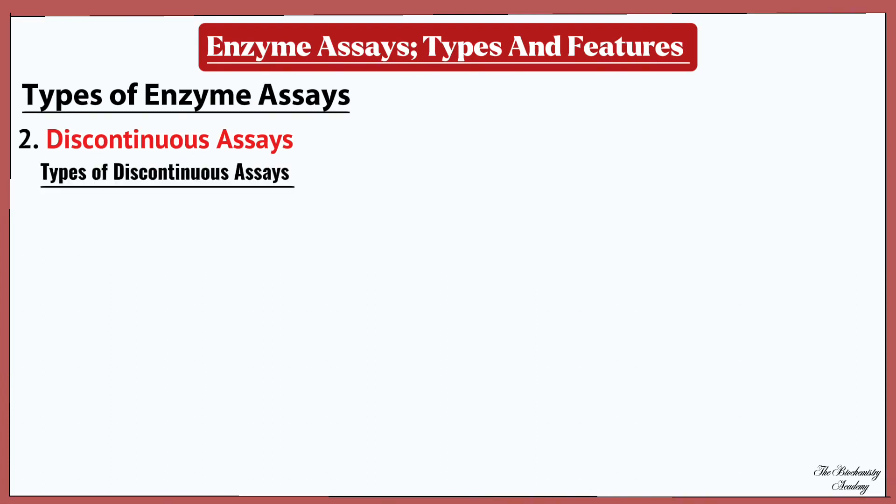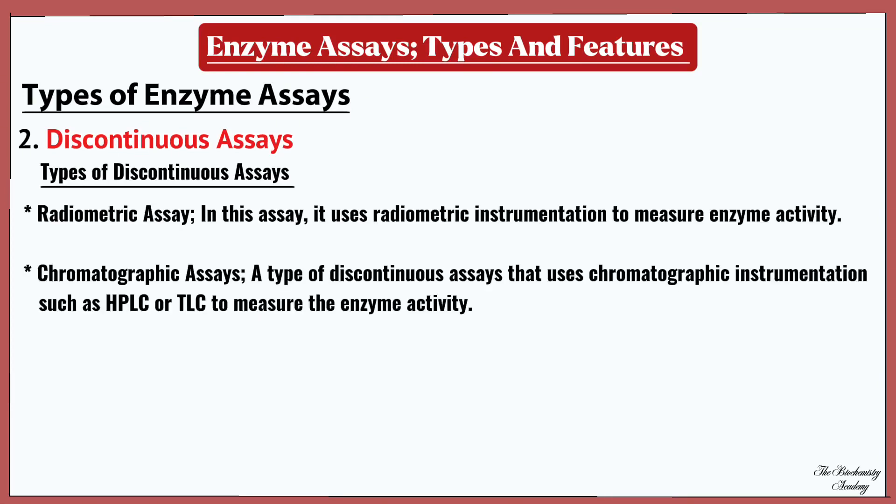There are two types of discontinuous assay: the radiometric assay and the chromatographic assay. In the radiometric assay, radiometric chromatographic instrumentation is used to measure the enzyme activity. The chromatographic assay also uses chromatographic instrumentation — such as HPLC or TLC — to measure and understand the activity of the enzyme.